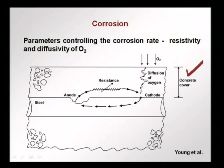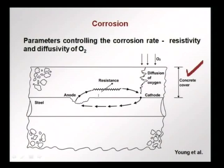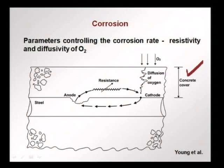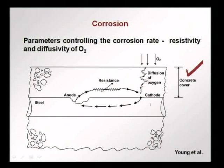For the electrochemical reactions to occur, ions and electrons must move from anode to cathode. This depends on the resistance offered by the concrete. If the concrete is dry, resistance is very high, ion and electron mobility is limited, and corrosion is slower. If porosity is connected and there is a lot of water facilitating electrochemical reactions, corrosion happens fast. We want concrete with very high resistivity — dry, low porosity — and we want to cut off oxygen so it does not reach the cathode.